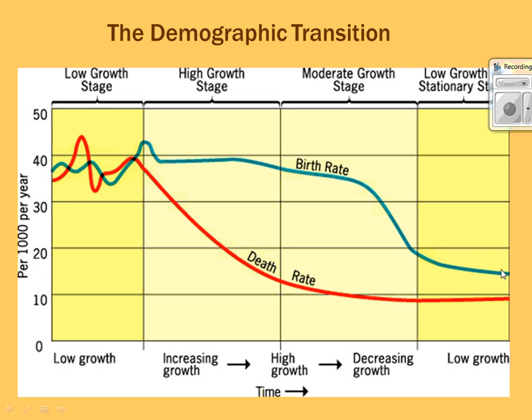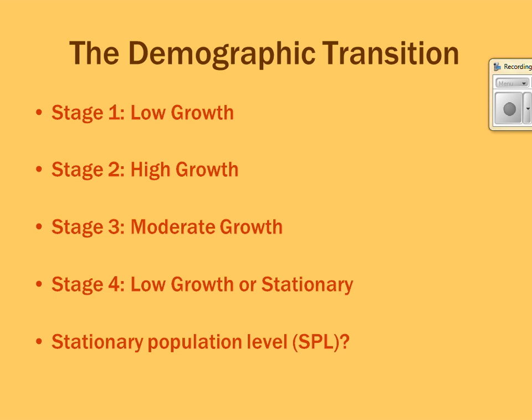Stage four is low growth again — not because of high births and deaths, but because of low births and low deaths. You may reach zero population growth, where as many people are dying as are being born. Some geographers think there should be a stage five with negative growth — less births than deaths — not from catastrophe but from people choosing not to have babies. Western Europe often experiences this.